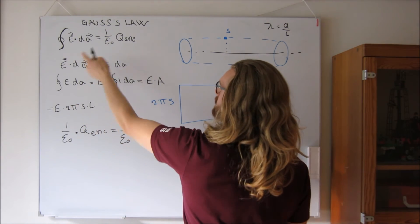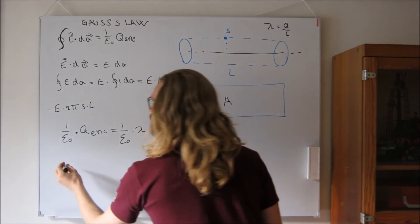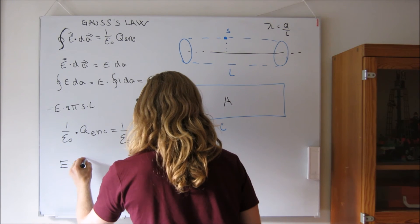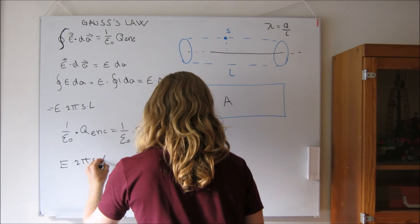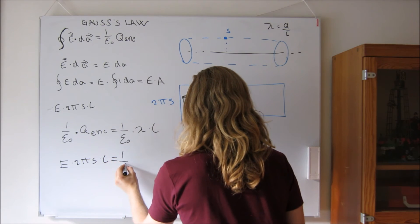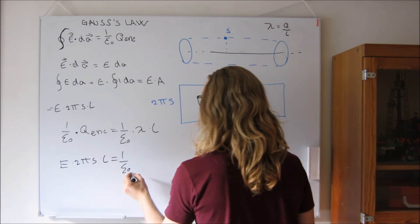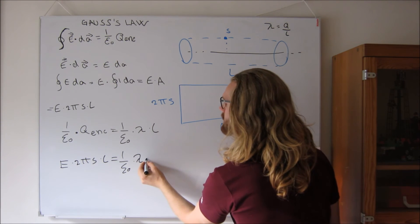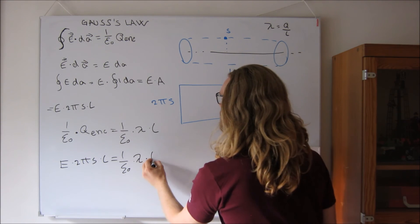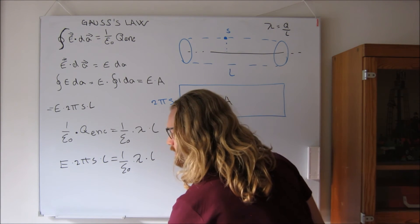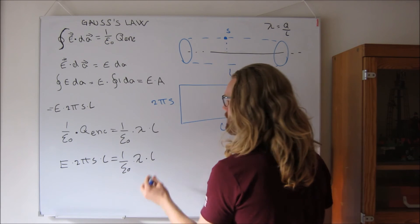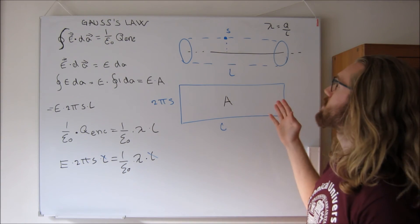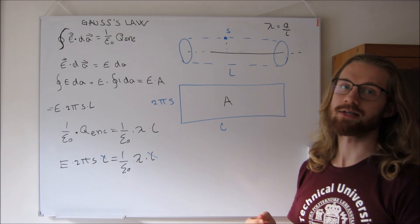Combining both sides of Gauss's law gives us E times 2πs L equals (1/ε₀) times lambda times L. We see that L cancels — the length of the cylinder doesn't matter in this regard.